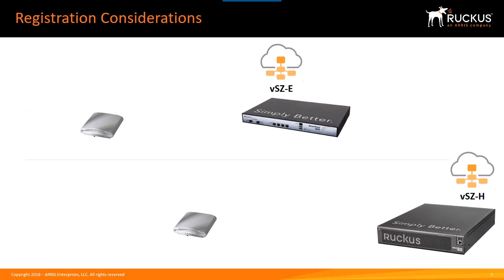Before we get into the actual process of registering an access point to the controller, I want to do a quick overview of some of the considerations. I'm going to run through two scenarios — they're mostly the same, but there are some slight differences between the Essentials Edition, which runs on the SmartZone 100 hardware platform, and the High Scale Edition virtual SmartZone, which also runs on the SmartZone 300 hardware platform.